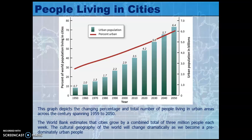Around 2006 or 2007 it was determined that we as a species became less rural and more urban, crossing that 50% threshold. This graph shows the 50% mark was somewhere right around 2010, showing percent urban overall.